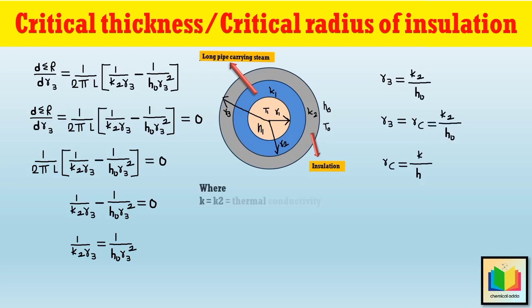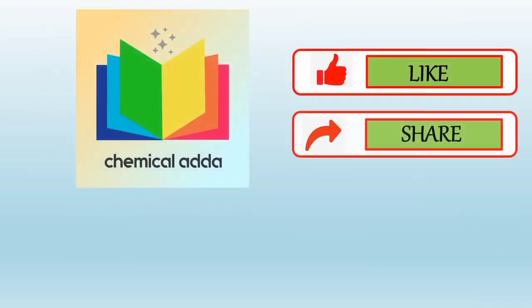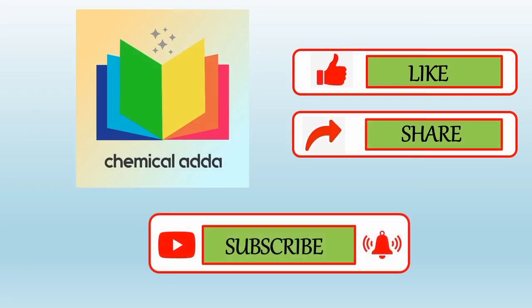Here, k2 is the thermal conductivity of the insulating material and ho is the convective heat transfer coefficient at the outer surface of the insulation. Therefore, the equation for the critical radius of insulation is: rc = k/h, where heat loss is maximum. That is all about the critical thickness of insulation. Keep watching — in the next video we will discuss another topic. If you like this video, please like, share, and subscribe to my YouTube channel, Chemical Adda.